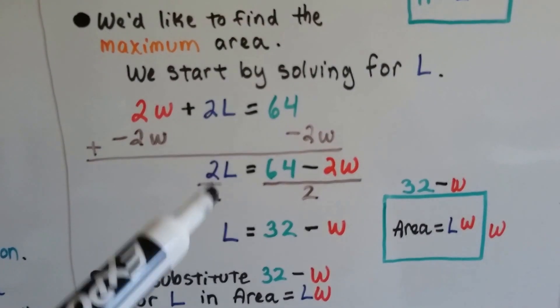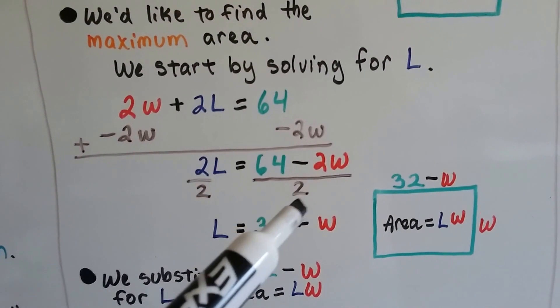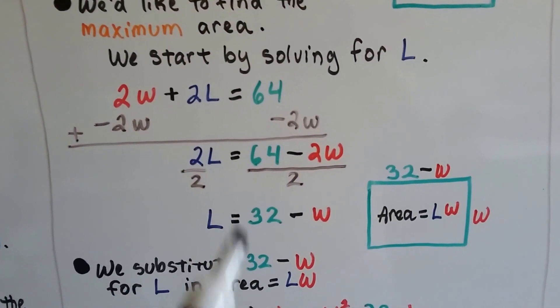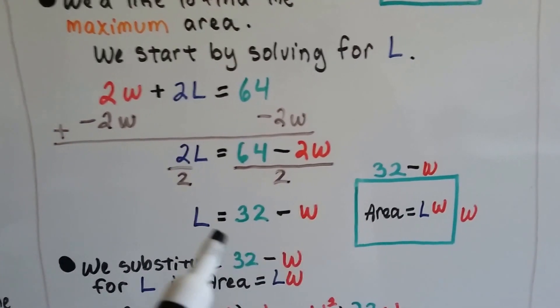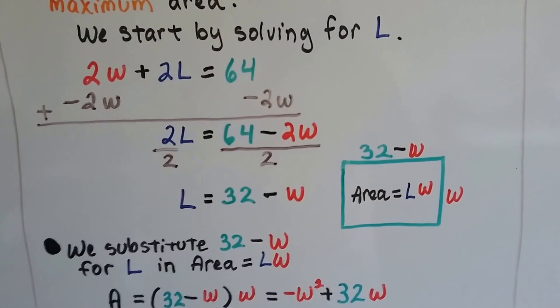We can divide both sides of the equation by this coefficient 2, and we get L = 32 - W. Now we can use 32 - W for our L value, so we have (32 - W) times W is going to give us the area.